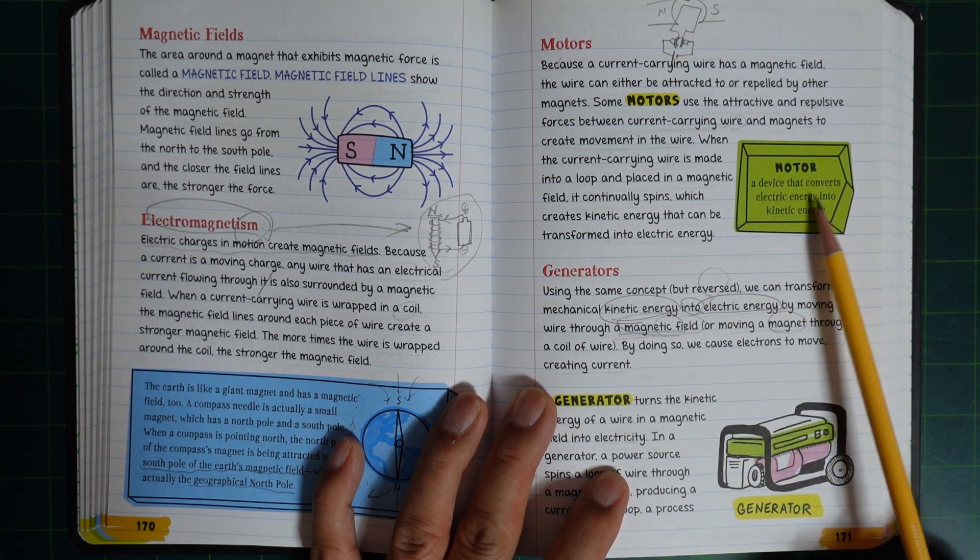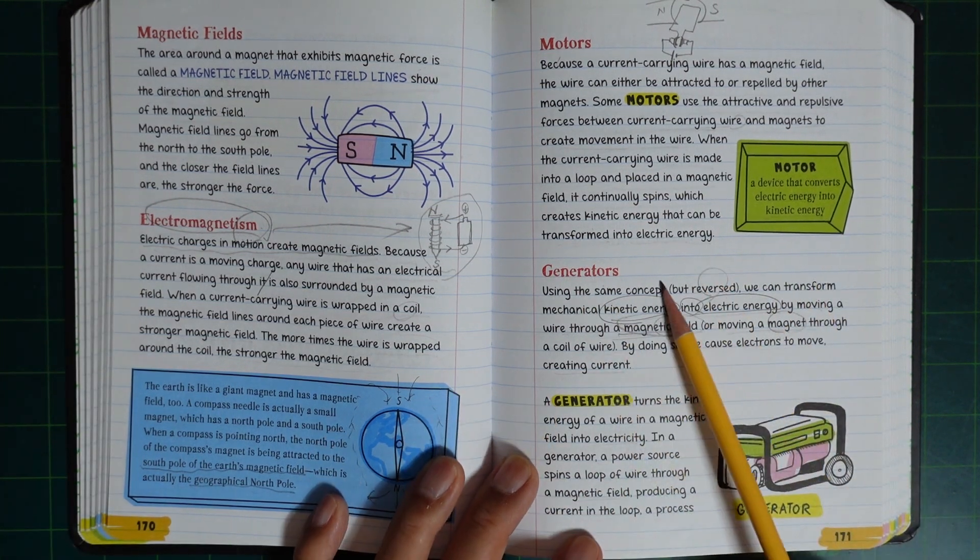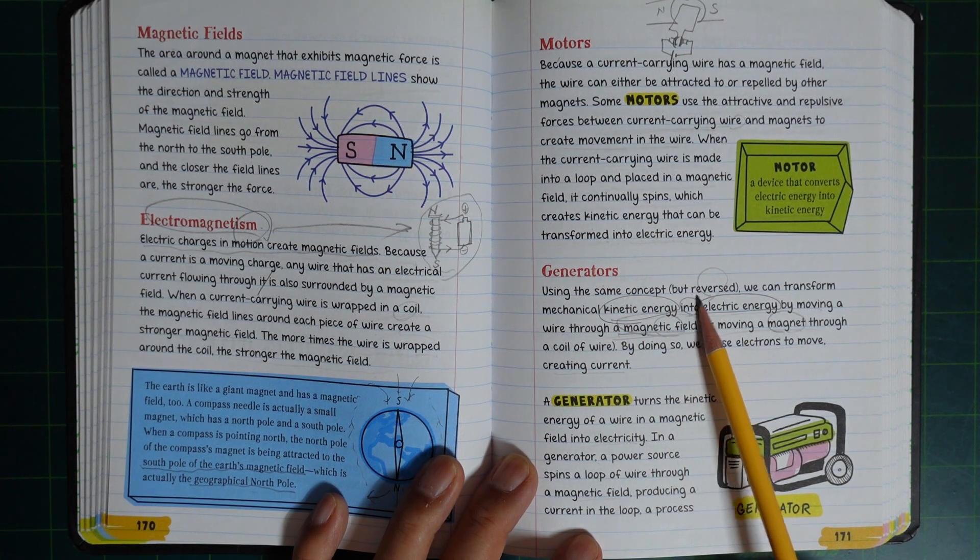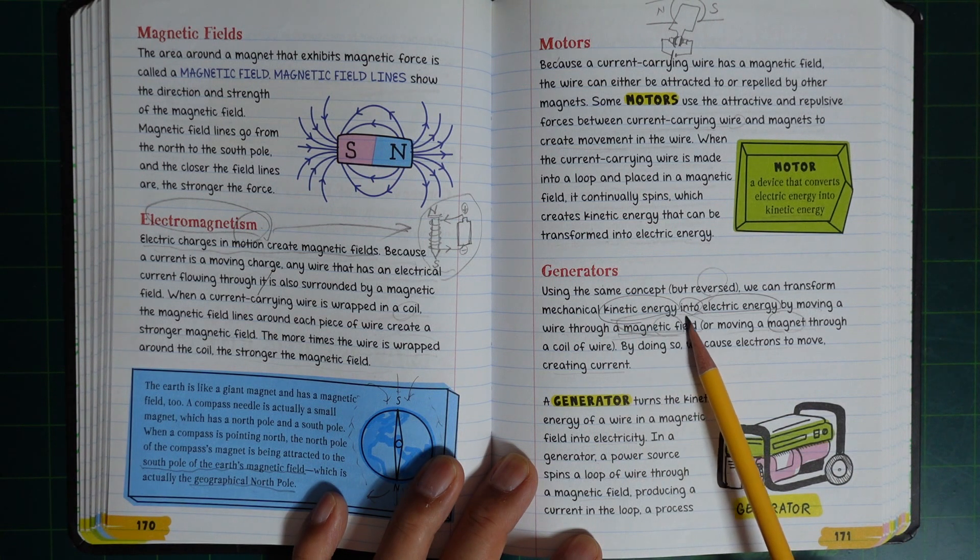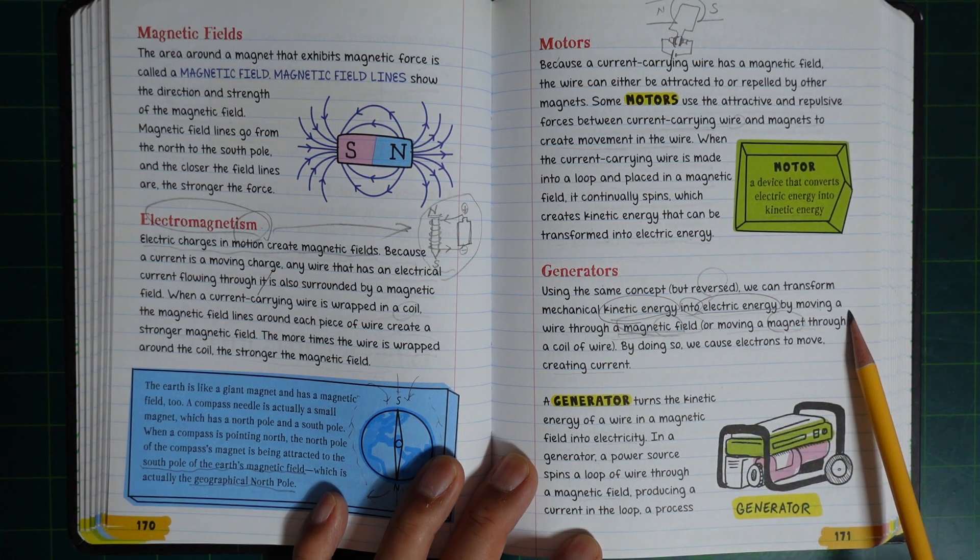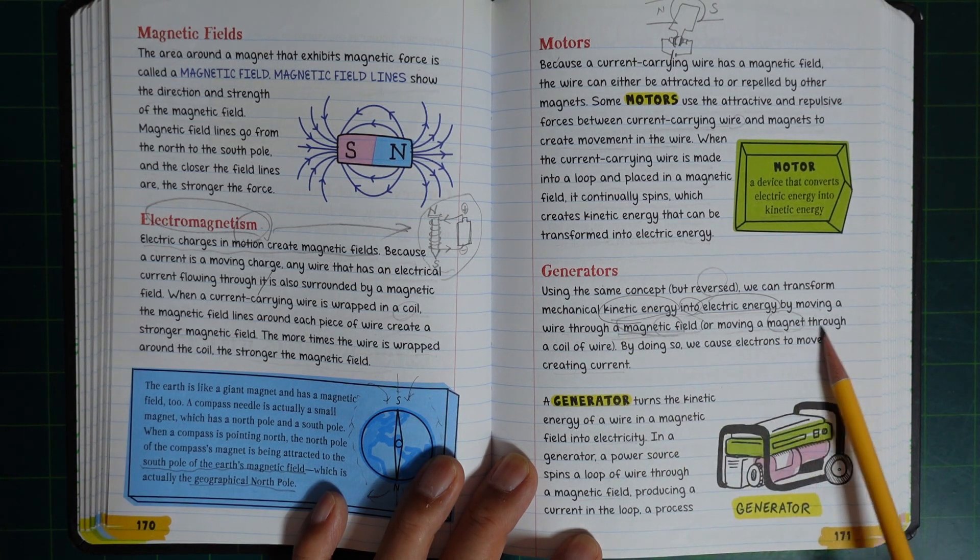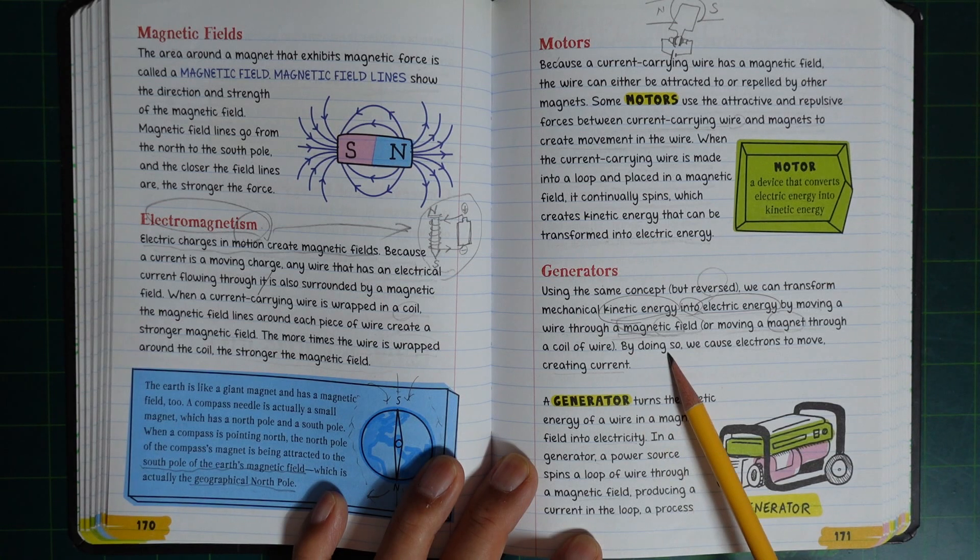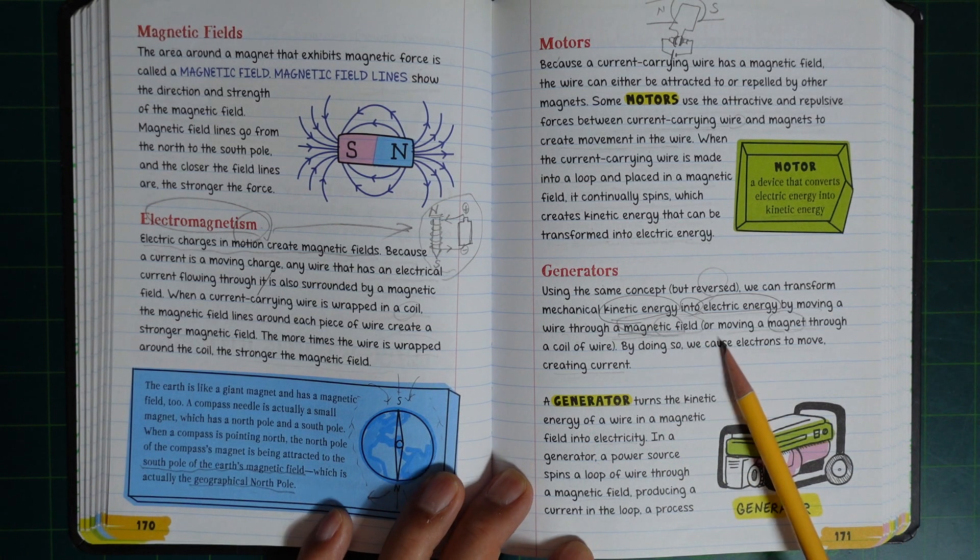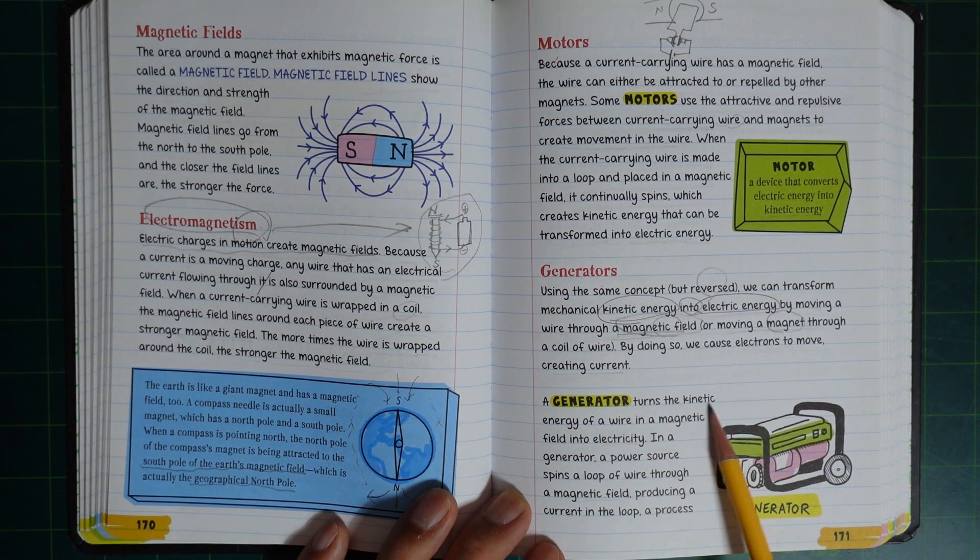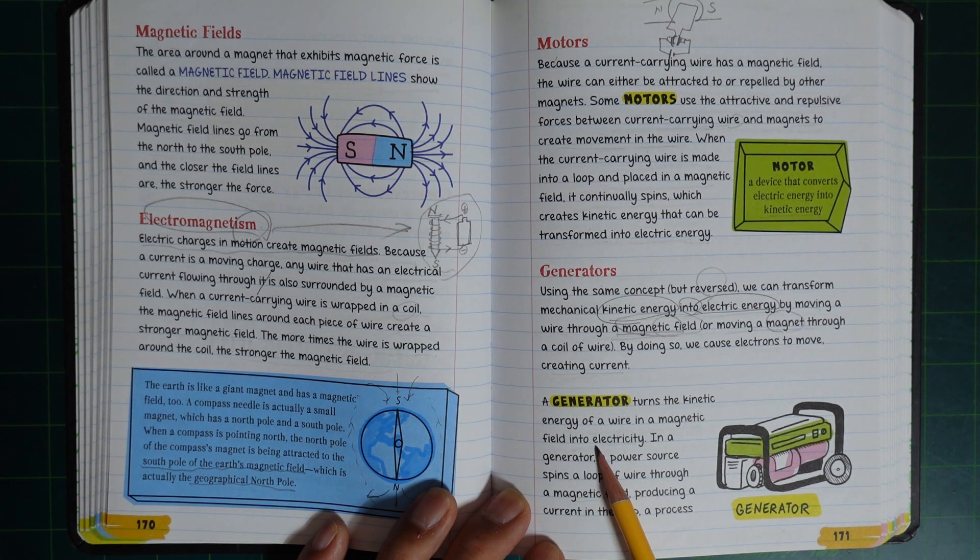Using the same concept but reversed, we can transform mechanical kinetic energy into electric energy by moving a wire through a magnetic field. By doing so, it causes electrons to move, creating current.